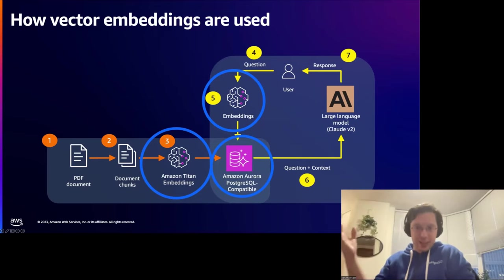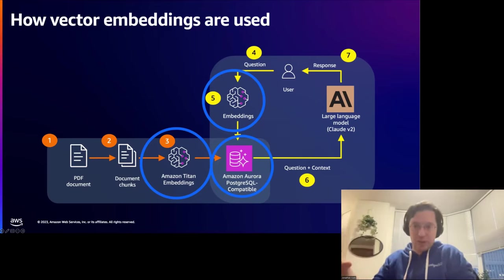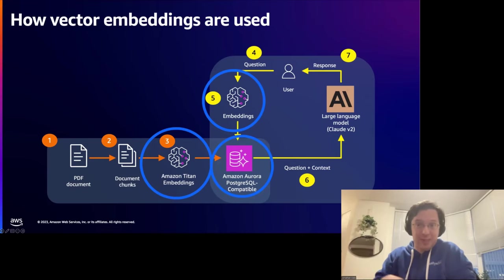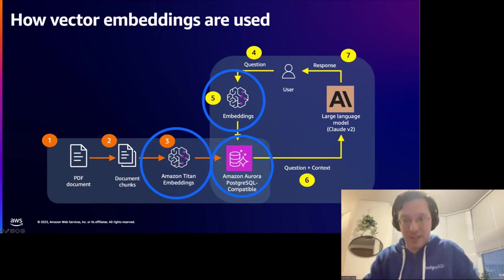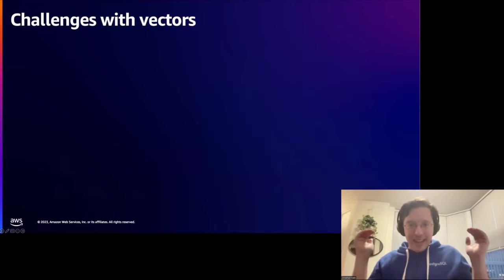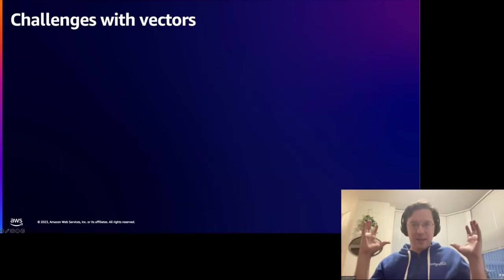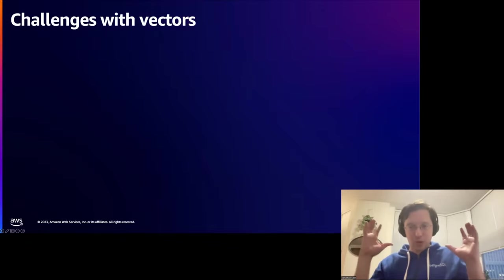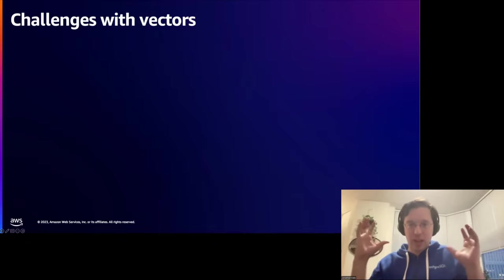It's a fairly straightforward workflow, yet very powerful, because you're able to apply additional knowledge to large language models through this very basic data type — the vector. A lot of this workflow is enabled by doing a vector search, which is something you learn in an introductory computer science course. And yet, I call vectors a nasty data type — because even though they're so simple on many levels, trying to work with them at scale presents many challenges.